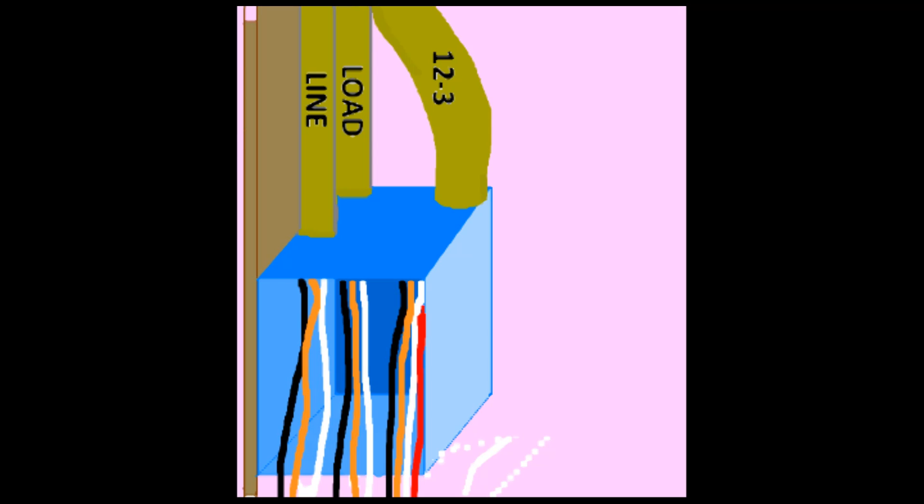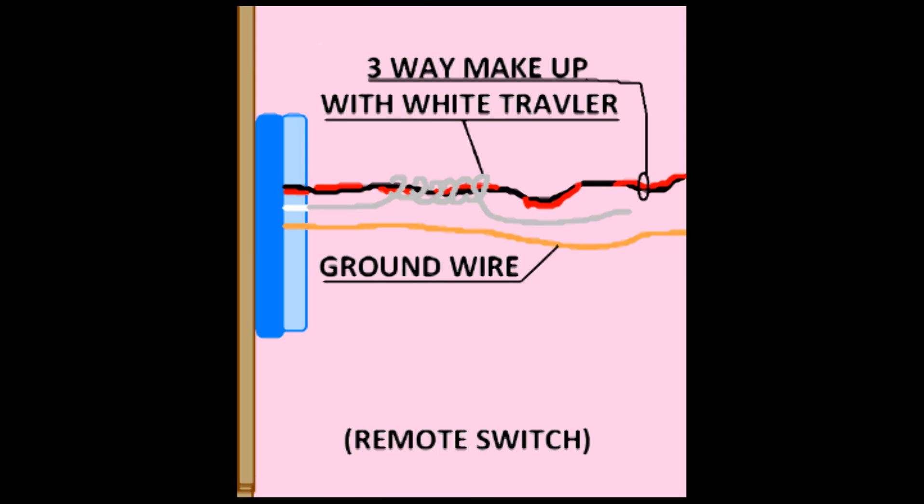This is a three-way box that is going to be switched and fed from the same location. The other twin three-way only has one piece of 12-3 running into it.